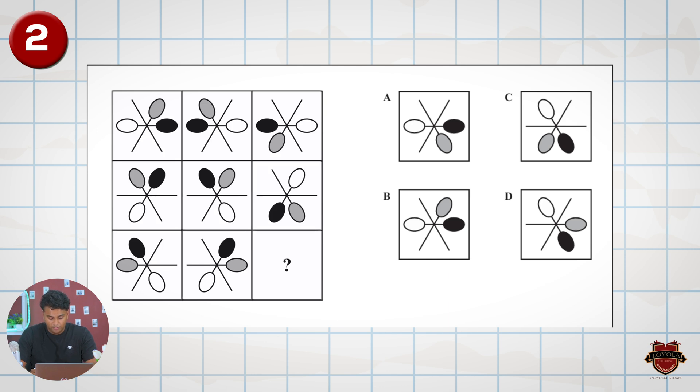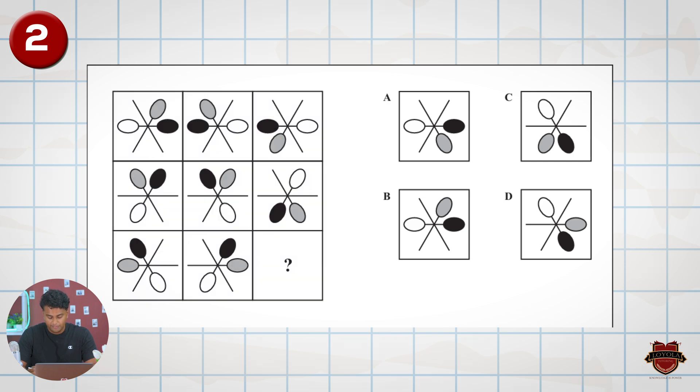So in the final row the black is moving plus one clockwise. We can assume that it's going to go plus one again, crossing out A and crossing out B, so we're left with C and D.